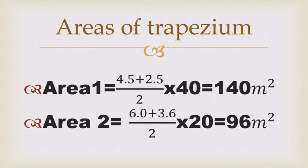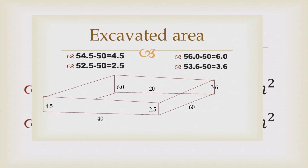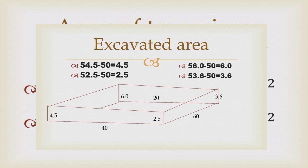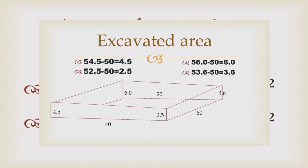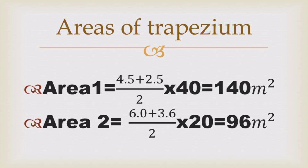The same approach is applied to Area 2, where the height is 20 meters — that is the interval between those two reduced levels. The sides are 6 meters and 3.6 meters. Having done that, Area 2 comes to 96 square meters.